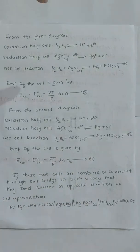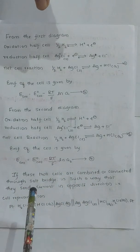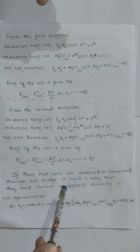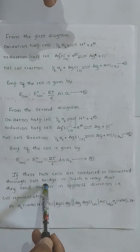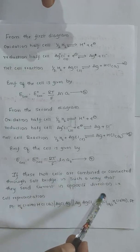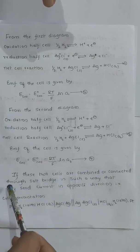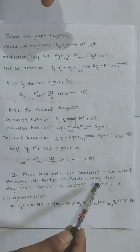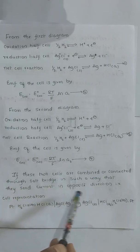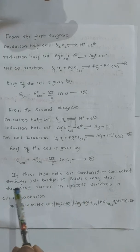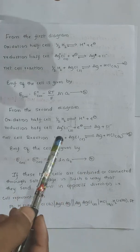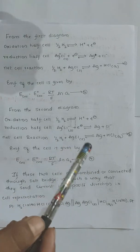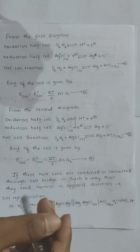Now we are going to combine or connect these two cells through the salt bridge, such that the currents are in opposite directions. We connect cell 1 to the left side and cell 2 to the right side. At the left side, oxidation occurs — electrons flow from left to right, so current flows in the opposite direction.